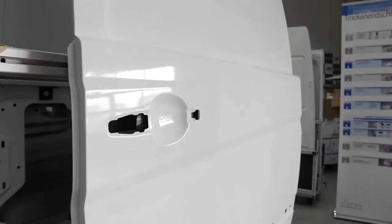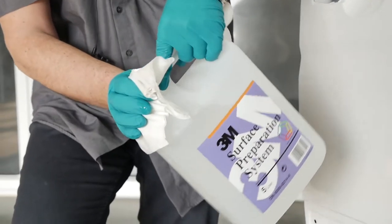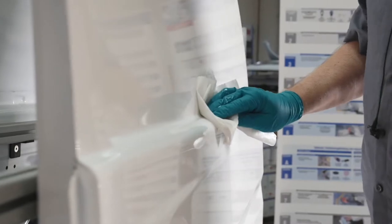Cleaning the surface of the substrate is essential before starting the application. Pour a small amount of 3M Surface Preparation System onto a lint-free cloth and wipe across the panel in a smooth action.